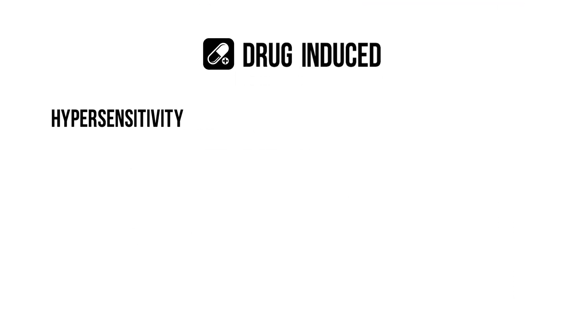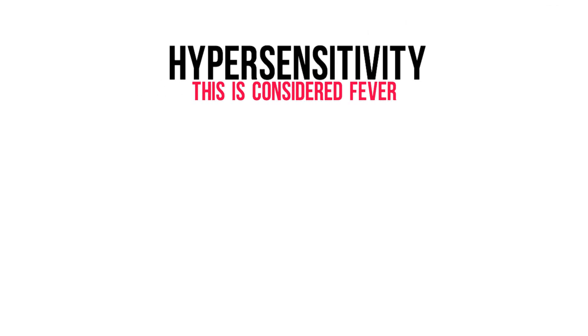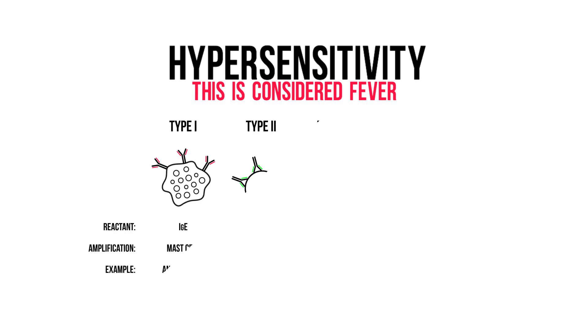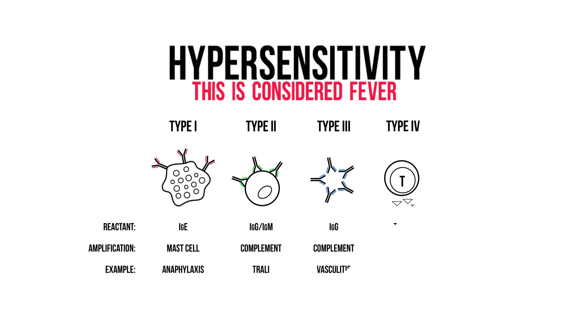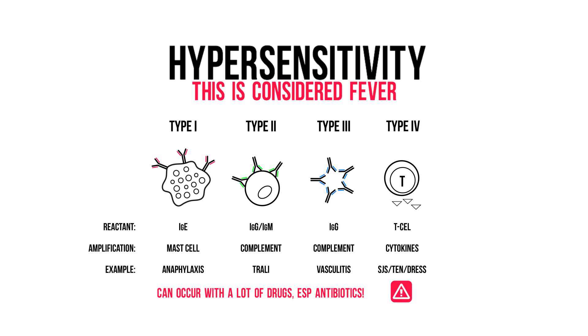Drug-induced hyperthermia caused by a drug hypersensitivity reaction is actually considered fever, as it is an inflammatory response to a drug. Drug hypersensitivity reactions are classified by the Coombs and Gel allergy types 1 through 4. It's important to remember that it can occur with just about any drug, especially antibiotics. If a hypersensitivity reaction occurs, your main action is to discontinue the drug and provide supportive care. In rare cases, drug hypersensitivity causes multi-organ failure — examples are type 4 reactions like TEN and DRESS.